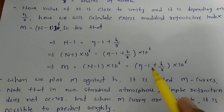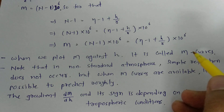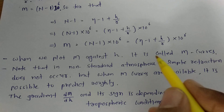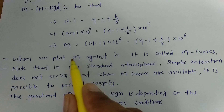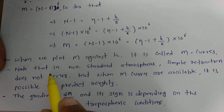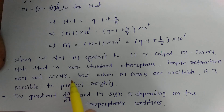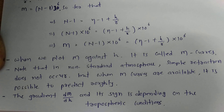M can also be expressed as (eta minus 1 plus h over r) times 10 to the power 6. When we plot M with respect to h, that graph is called M-curves. To understand duct propagation, we need to understand M-curves. The gradient — that is, the change in M with respect to change in height — and its sign depends on the tropospheric condition.